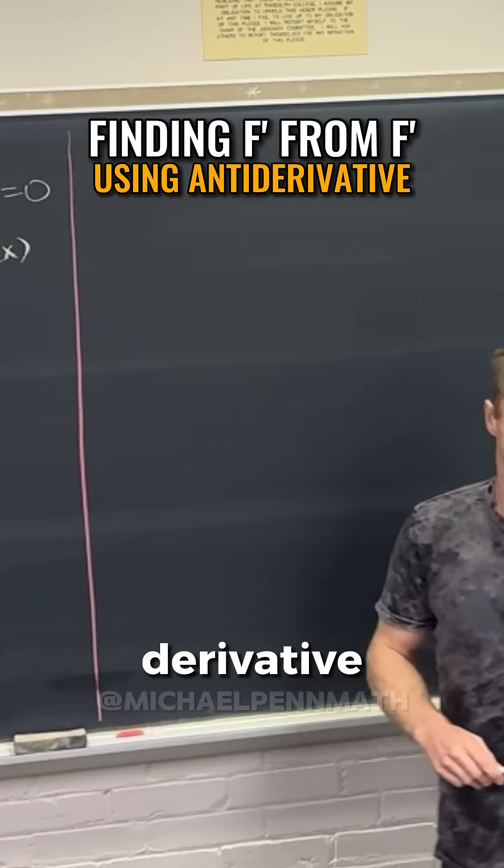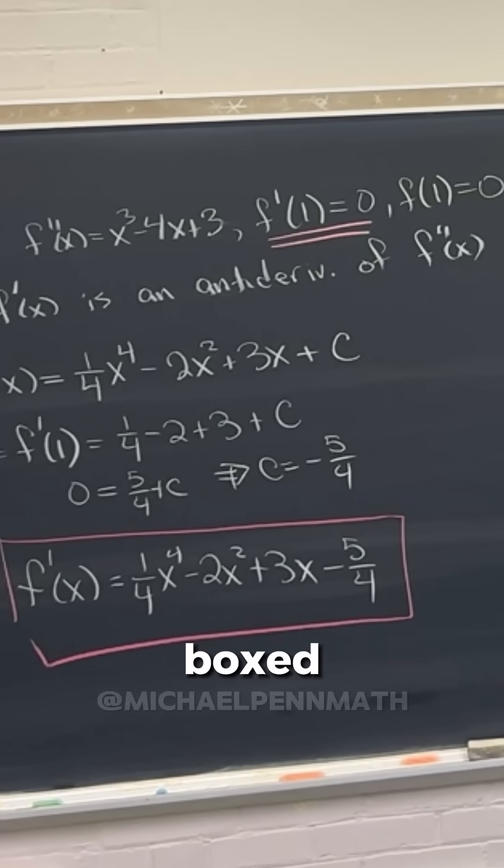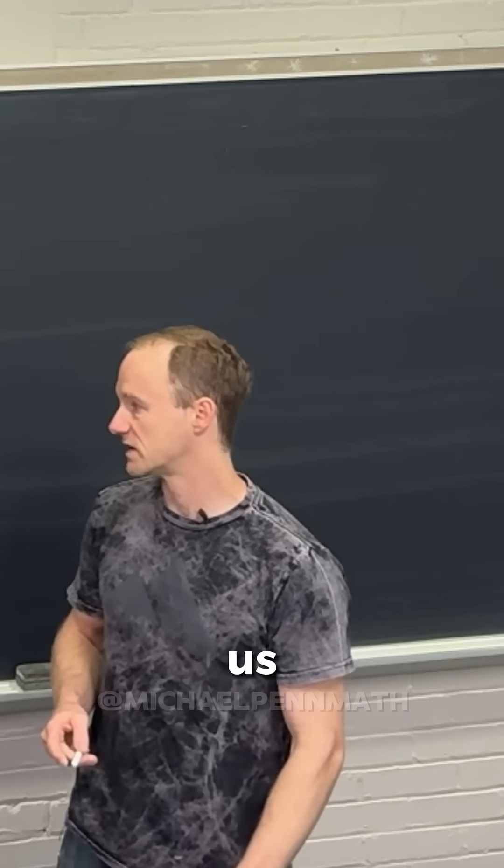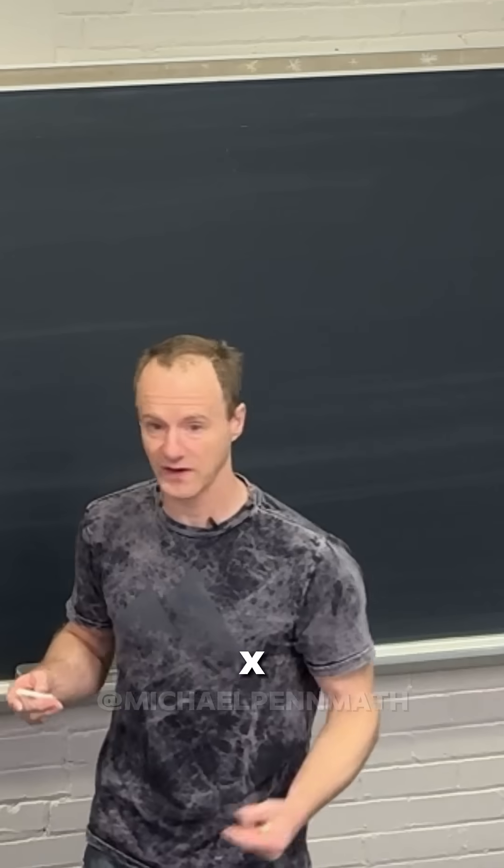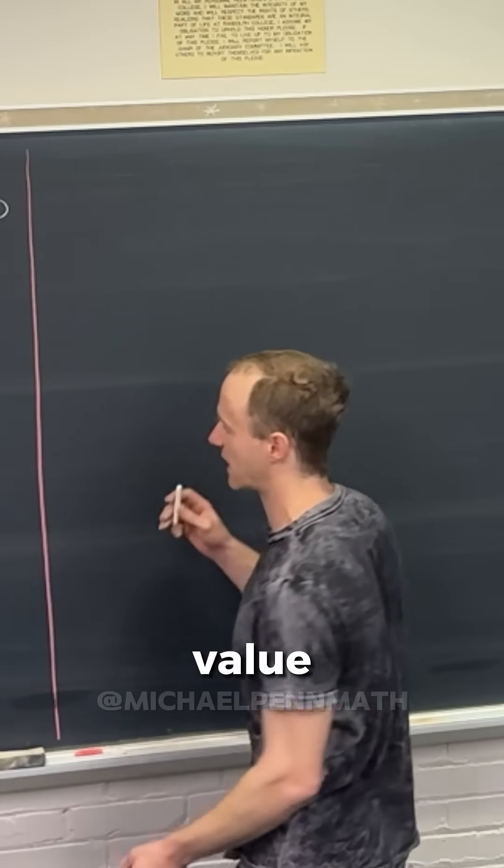f of x is an antiderivative of f prime of x, right? So we can take the antiderivative of the red boxed equation, and that will give us a general formula for f of x. And then perhaps we could use this right here, this second initial value or whatever.